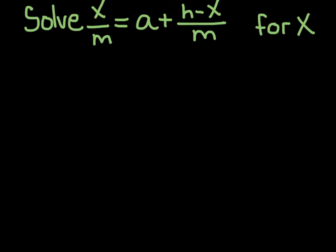Here's another example. Solve x over m equals a plus h minus x all over m. Solve it for x. So here's another one where x is in here more than once. We need to get it all by itself. So what I'm going to do is I am going to first get rid of this m in the bottom. I don't want fractions.